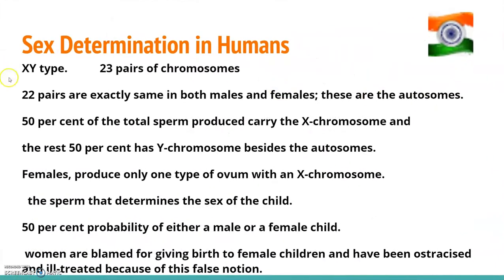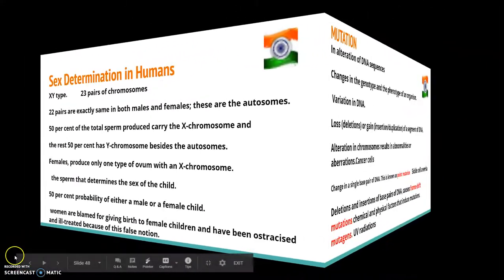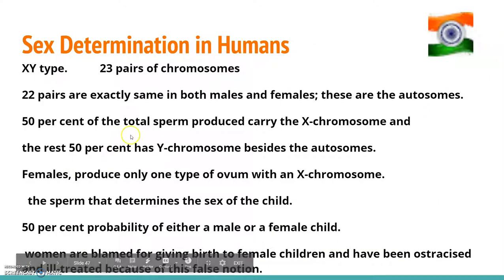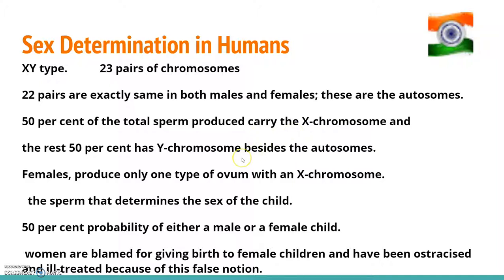In human beings, the sex determination mechanism is XY type. Out of 23 pairs of chromosomes, 22 are exactly the same in both males and females, and they are called autosomes. A pair of X chromosomes is present in females, while presence of X and Y chromosomes determines male characteristics. During spermatogenesis, two types of gametes are produced: 50% of sperm carry the X chromosome and the rest 50% carry the Y chromosome. Females produce only one type of ovum, carrying only the X chromosome.